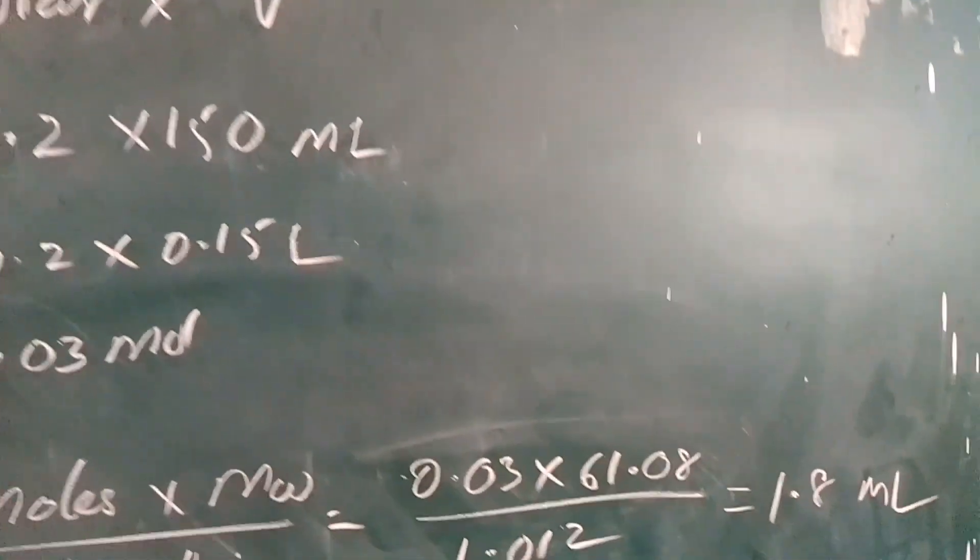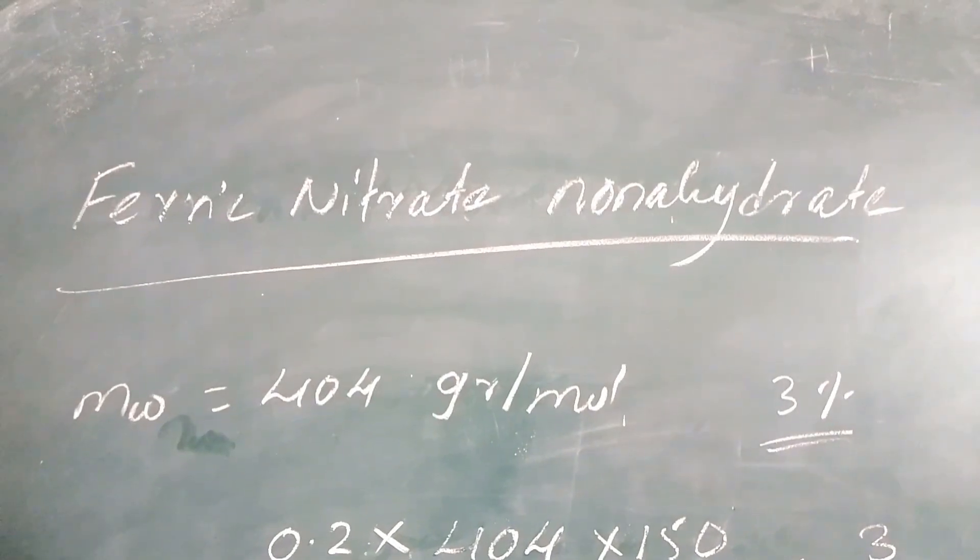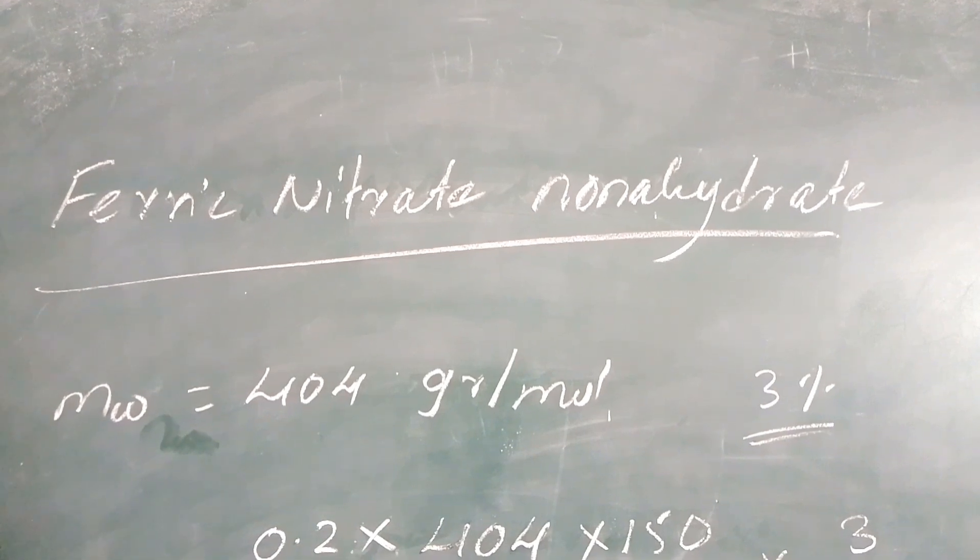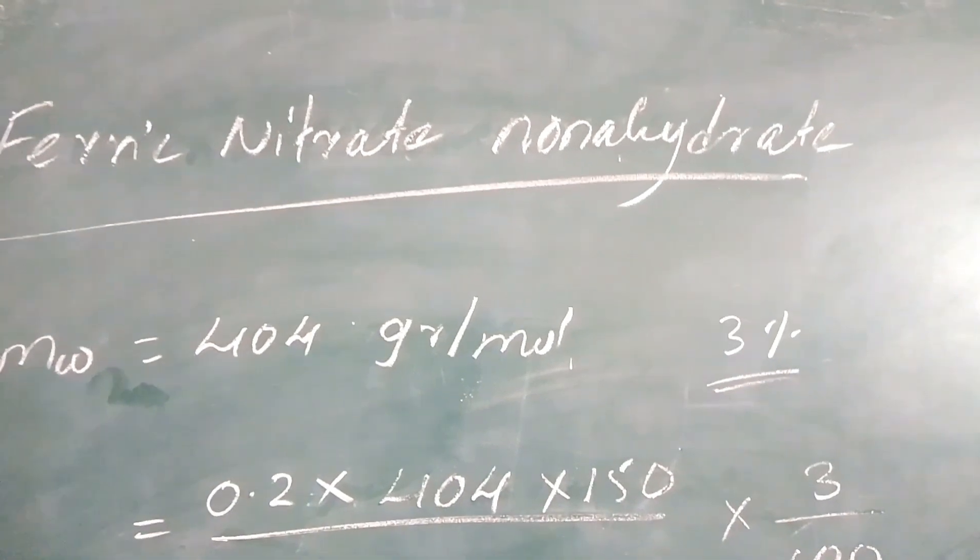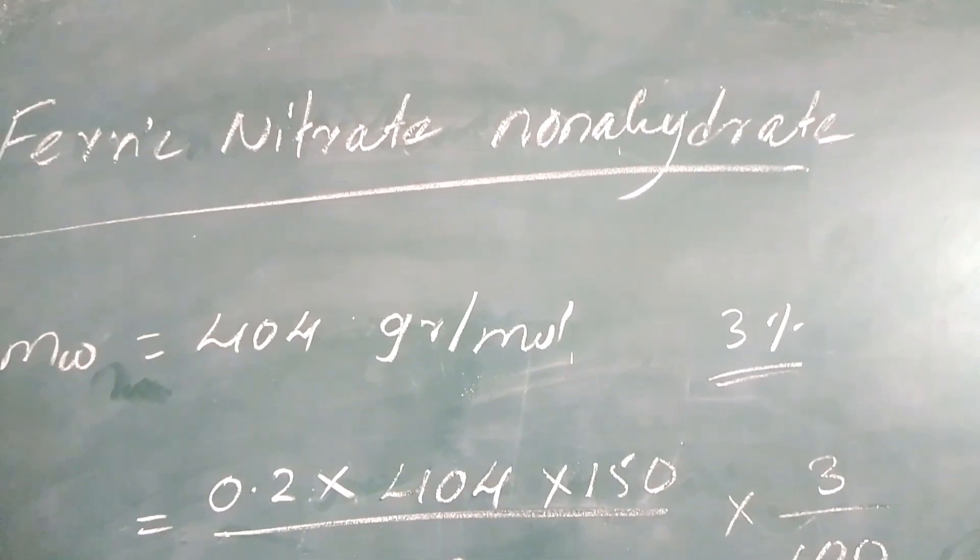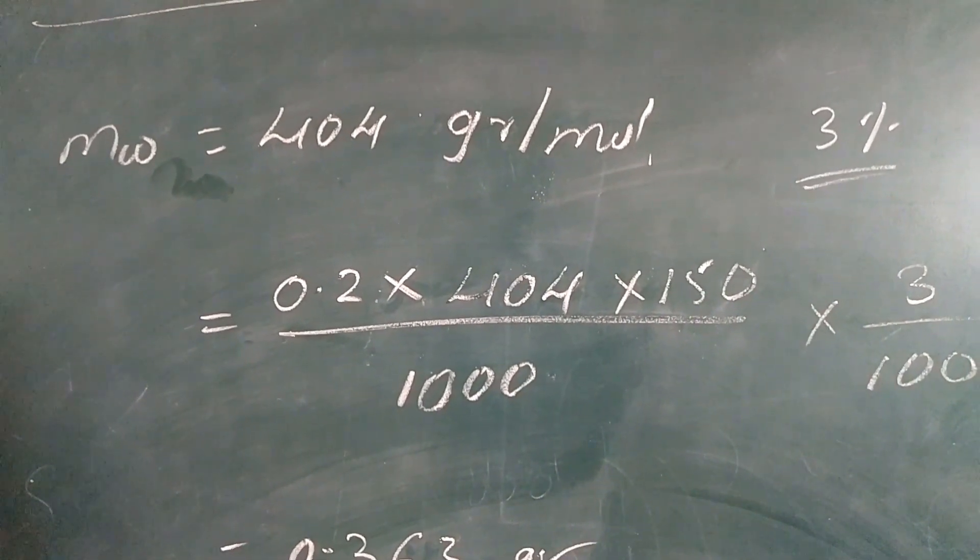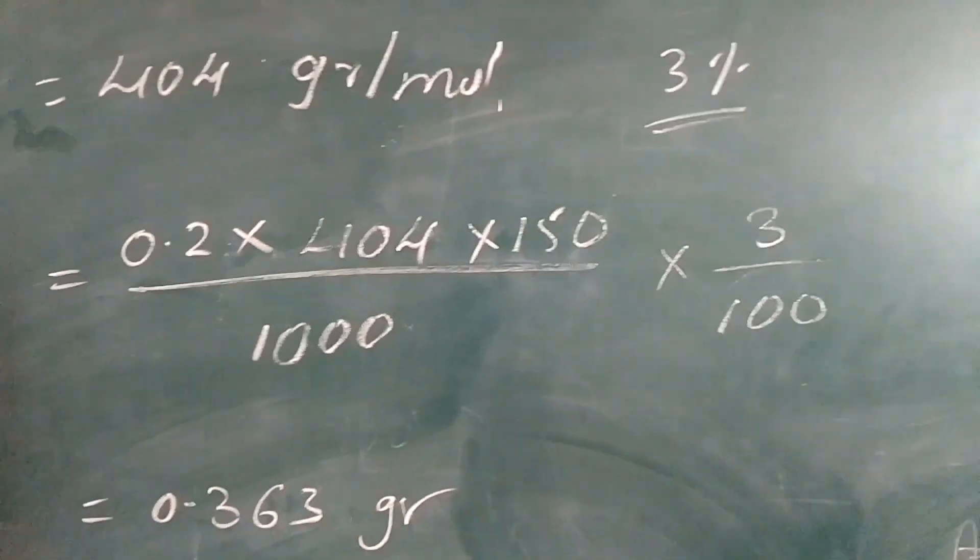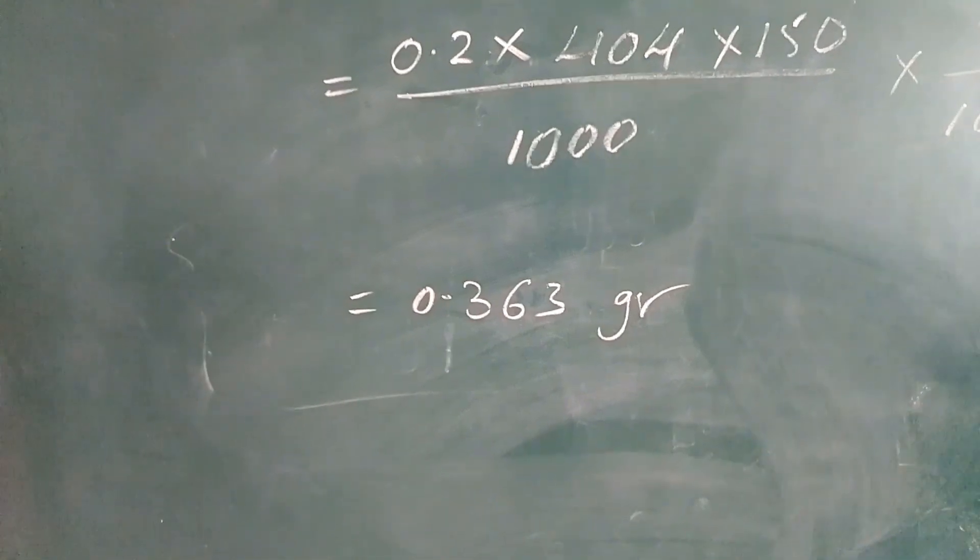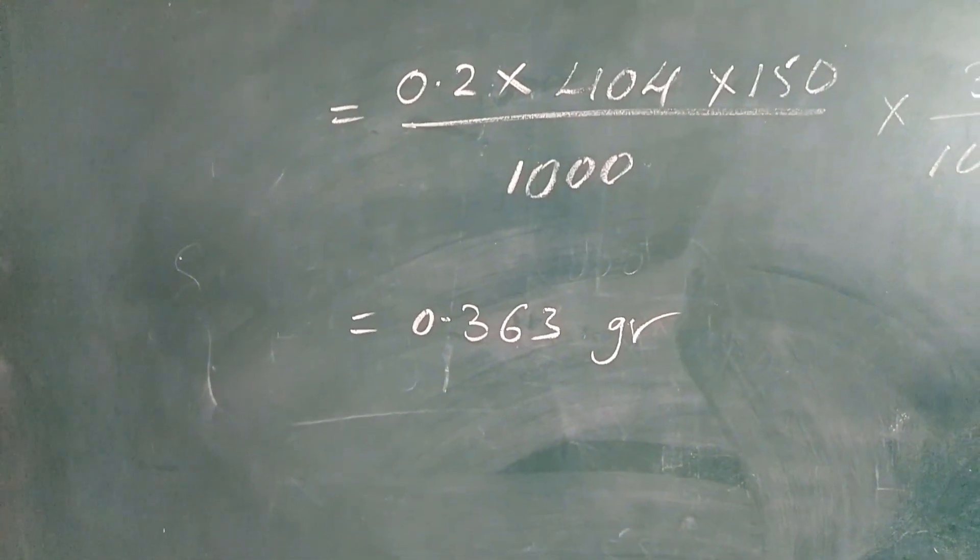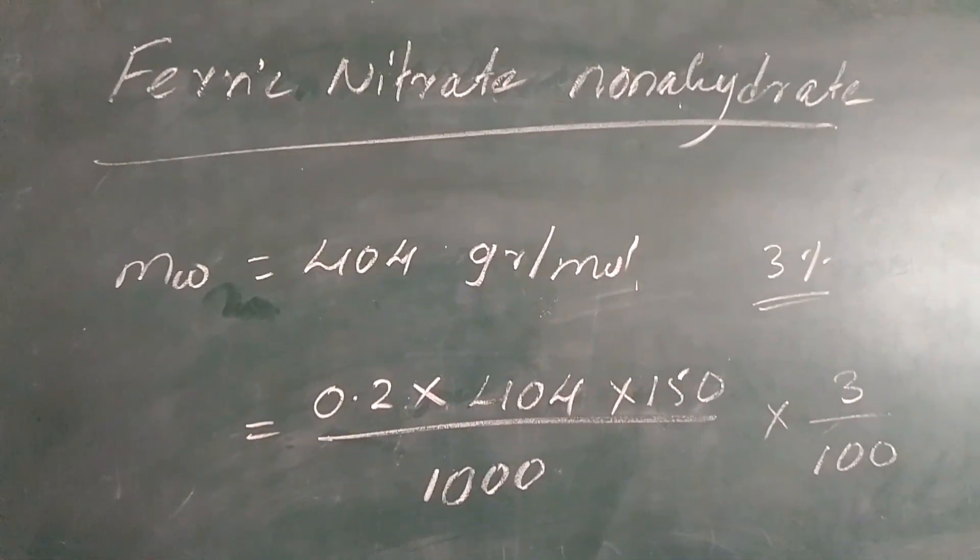In this process I am going to add monoethanolamine of volume 1.8 to 2 ml. For doping purpose here I am going to make use of ferric nitrate nonahydrate as the source of iron doping. The corresponding molecular weight is 404 grams per mole. I am going to add 3 percent of this compound, so 0.2 times 404 times 150 divided by 1000 times 3 by 100, which is approximately equal to 0.363 grams.